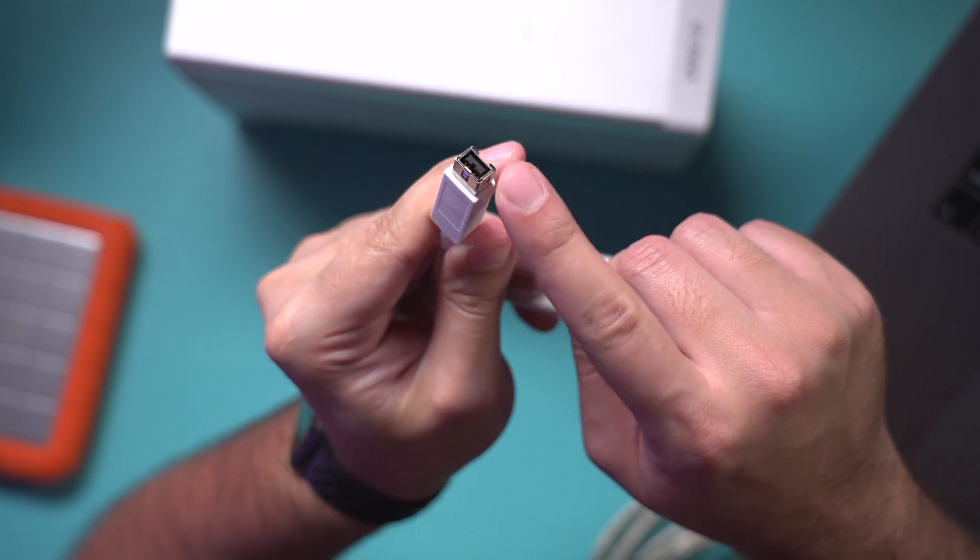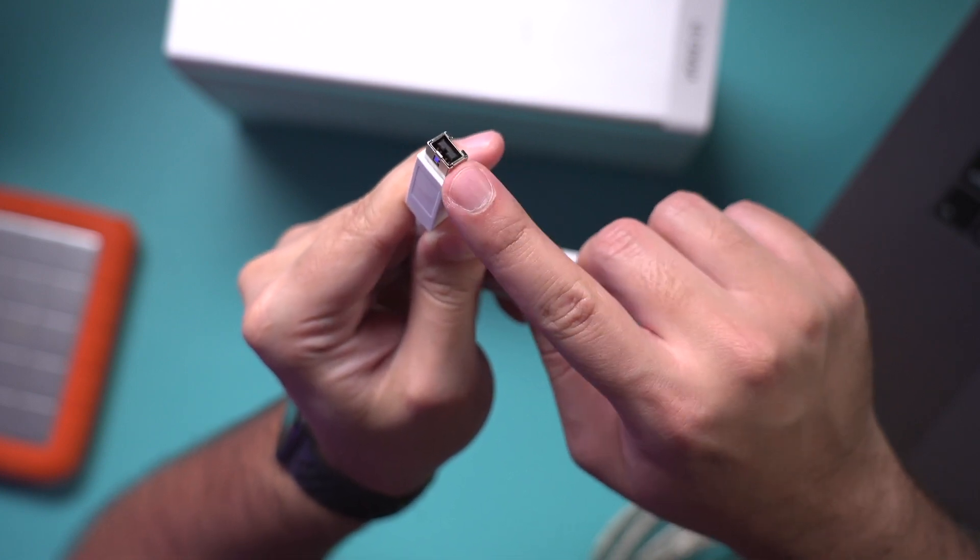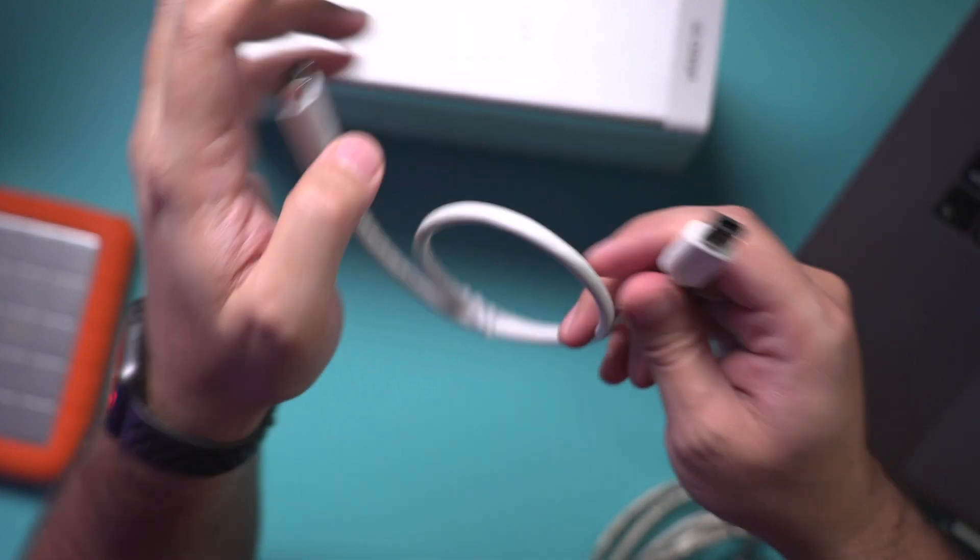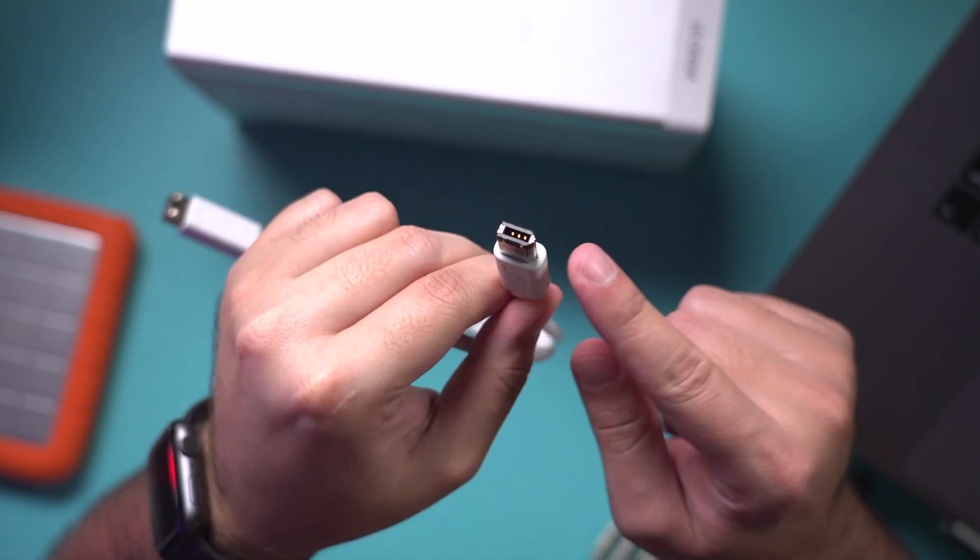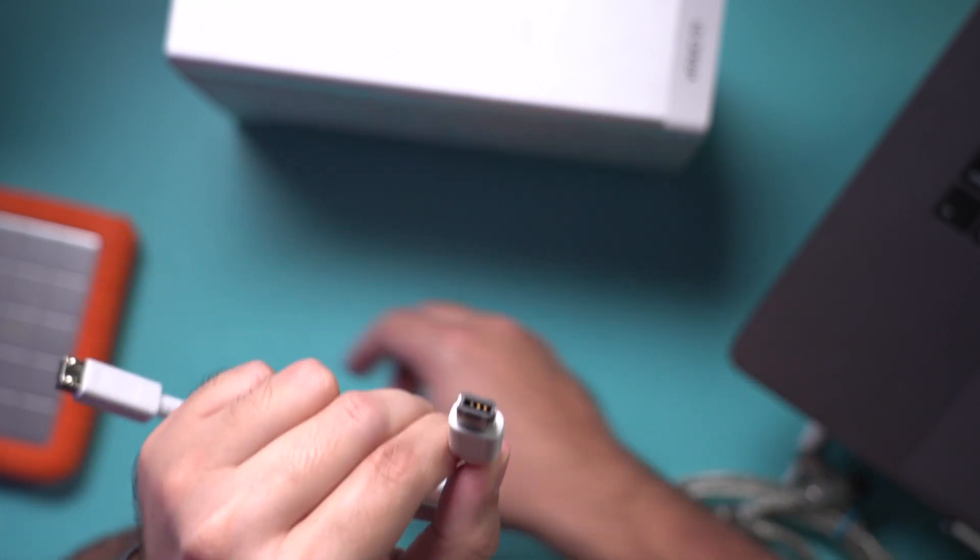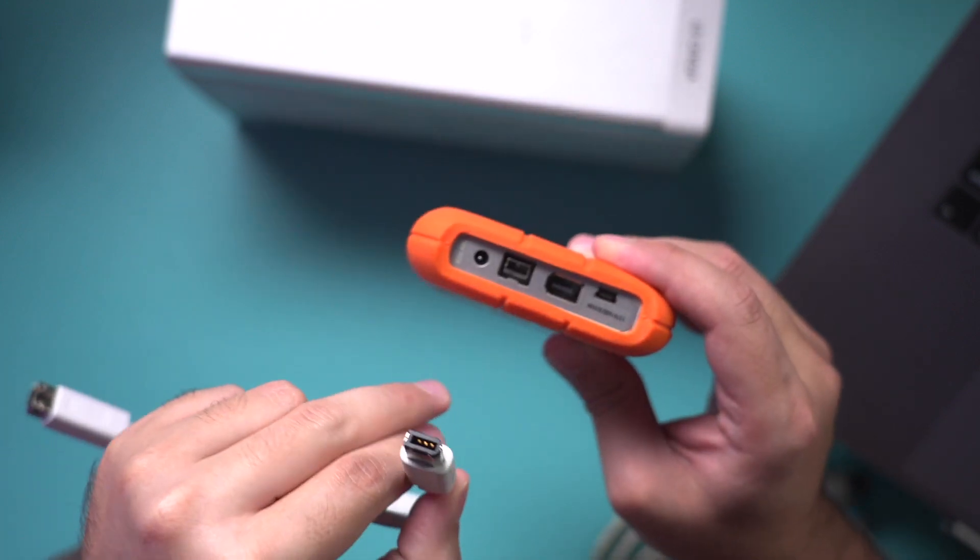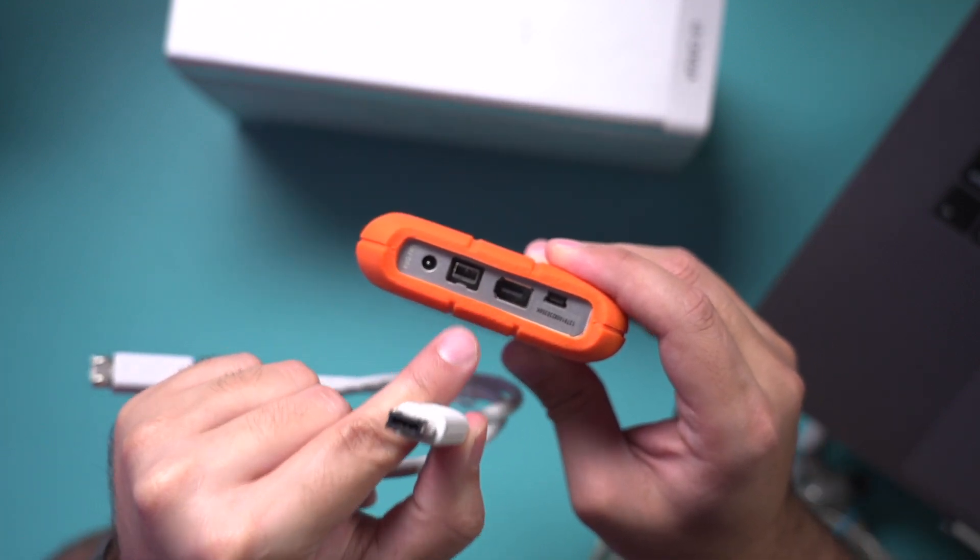This is called FireWire 800. I'll link some cables in the description so you could find them easily. This one is called FireWire 400, so this hard drive has basically both. I could choose one or the other, and there's this other type of cable.